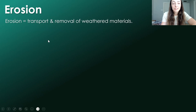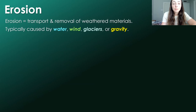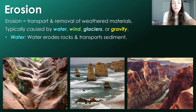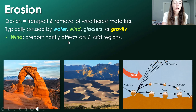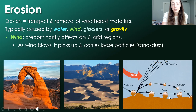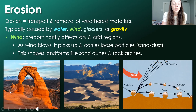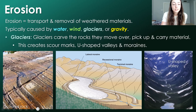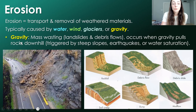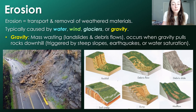Moving on to erosion — the transport and removal of weathered materials — this is typically caused by water, wind, glaciers, or gravity. Water erodes rock and transports sediment by streams, rivers, ocean waves, and tides, and these processes can carve deltas, valleys, and canyons — the Grand Canyon is a great example. Wind predominantly affects dry and arid regions, picking up loose particles and shaping landforms like sand dunes and rock arches. Glaciers carve rocks as they move over them, picking up material and creating scour marks, U-shaped valleys, and moraines. Gravity can cause mass wasting — landslides, debris flows — typically triggered by steep slopes, earthquakes, or water saturation.